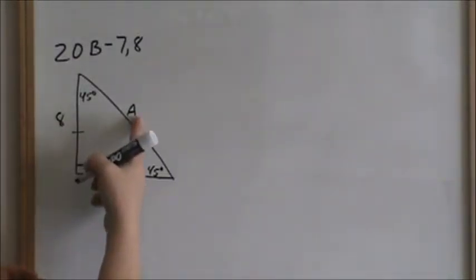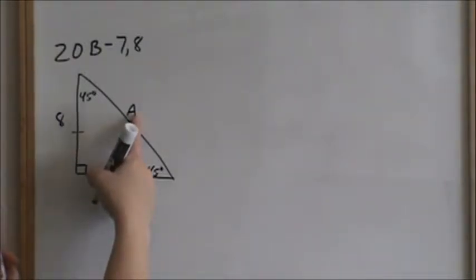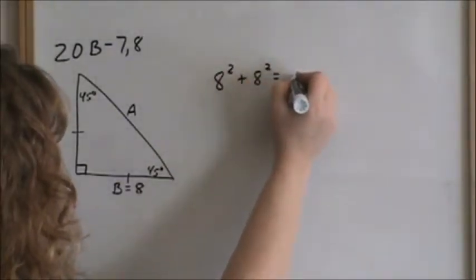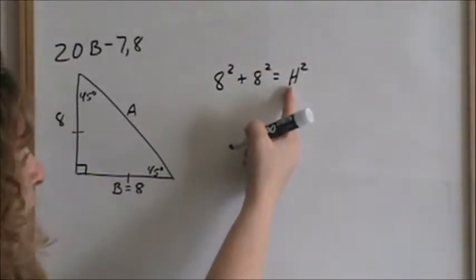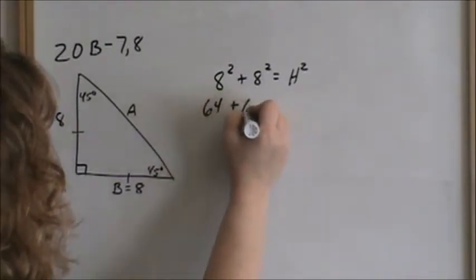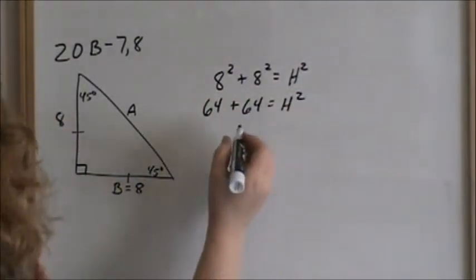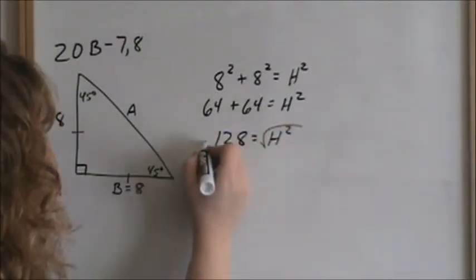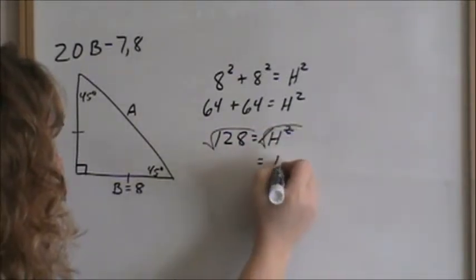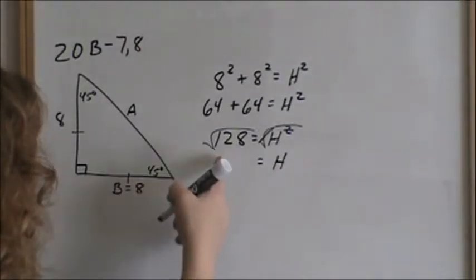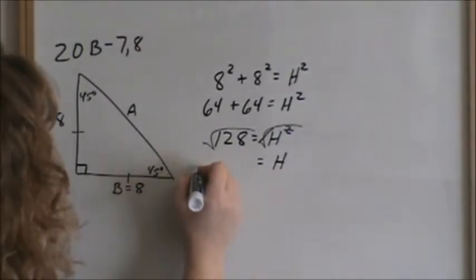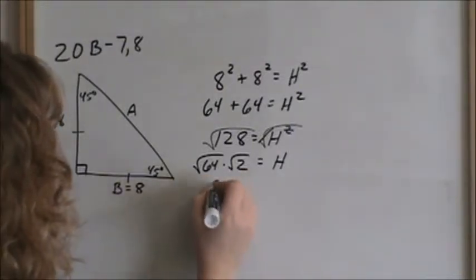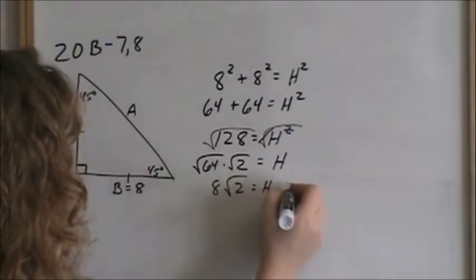Before using the shortcut, I'm going to use the Pythagorean theorem to solve for the hypotenuse, which they're calling A. Pythagorean theorem says leg squared plus leg squared equals hypotenuse squared. In this case we have 64 plus 64 equals hypotenuse squared, that's 128 equals hypotenuse squared. You take the square root of both sides — that radical cancels with that square and you have H. Now we have to simplify this radical. That would be the same thing as square root of 64 times square root of 2. Square root of 64 is a perfect square, so square root of 64 is 8. So the hypotenuse is 8 square root of 2.